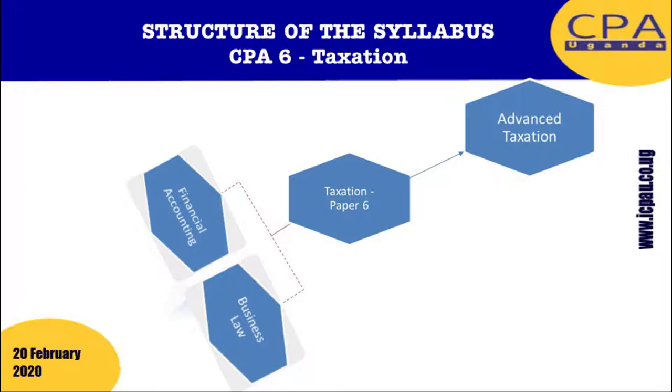If you look at that infograph, it actually tells you how the paper is built. I brought up the element of financial accounting because tax, as we know it, relies a lot on accounting information. If you look at the presumptive tax for small businesses, you'll notice that the turnover used to arrive at the decision that this individual falls under the presumptive tax treatment is an accounting record.